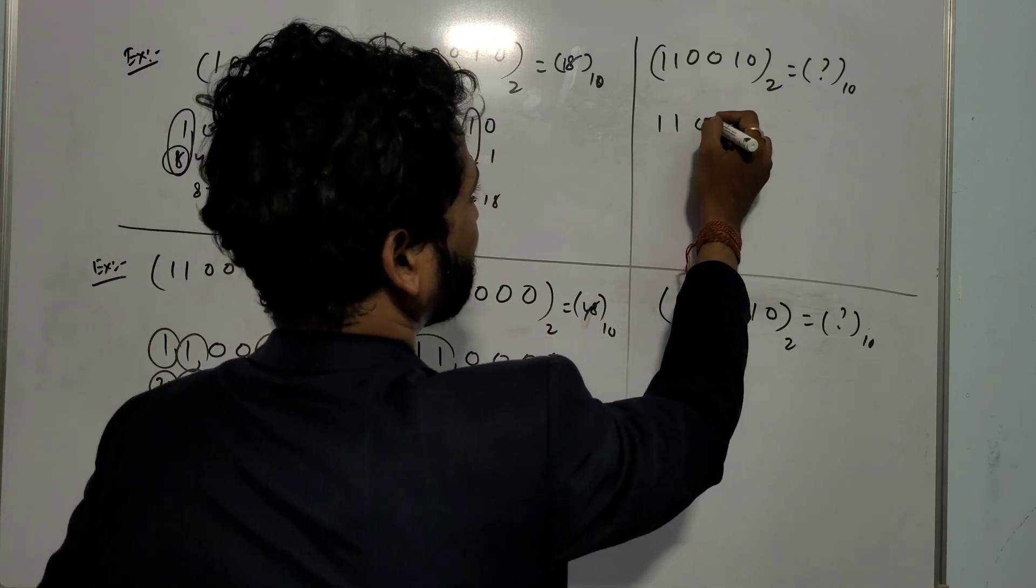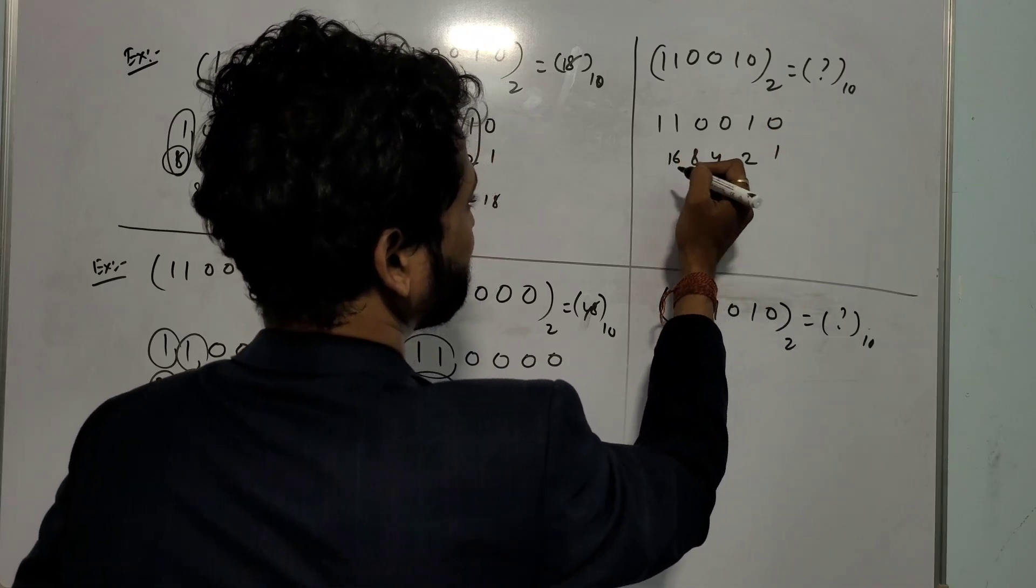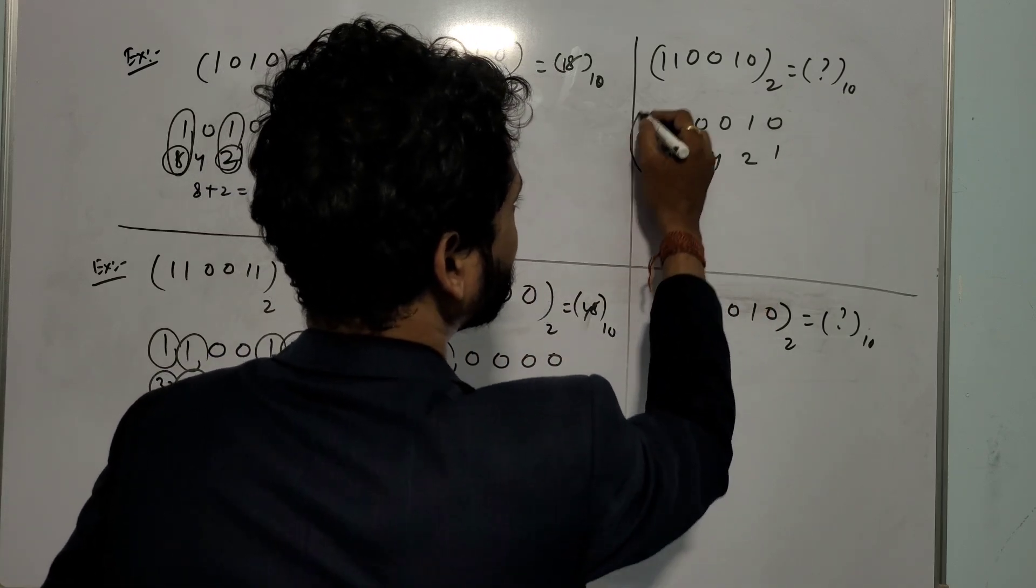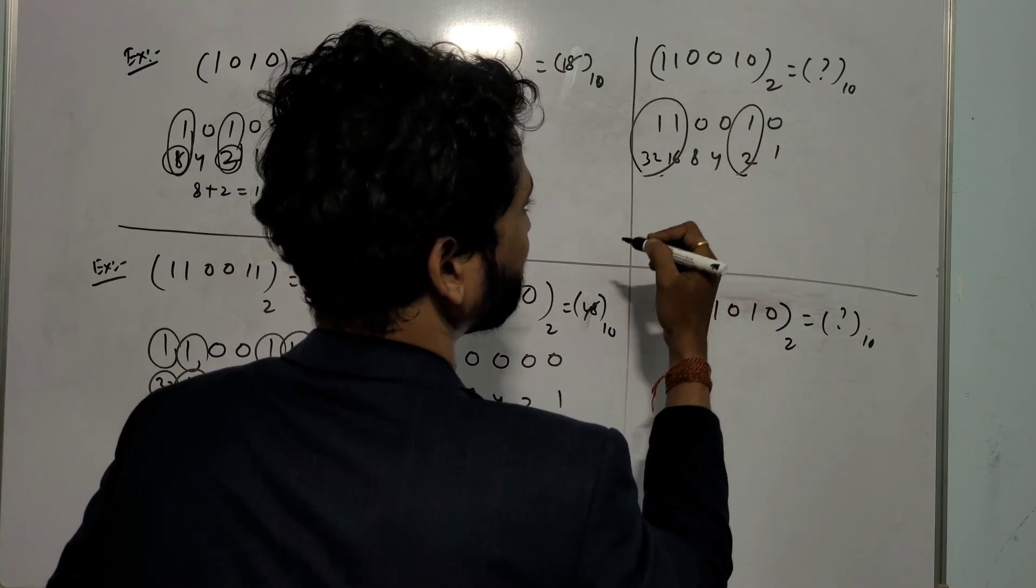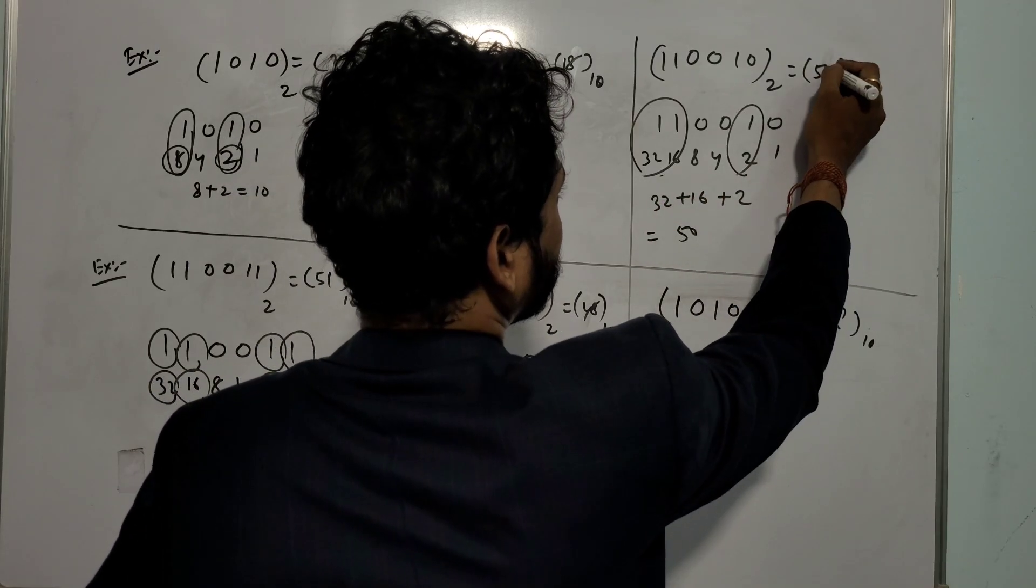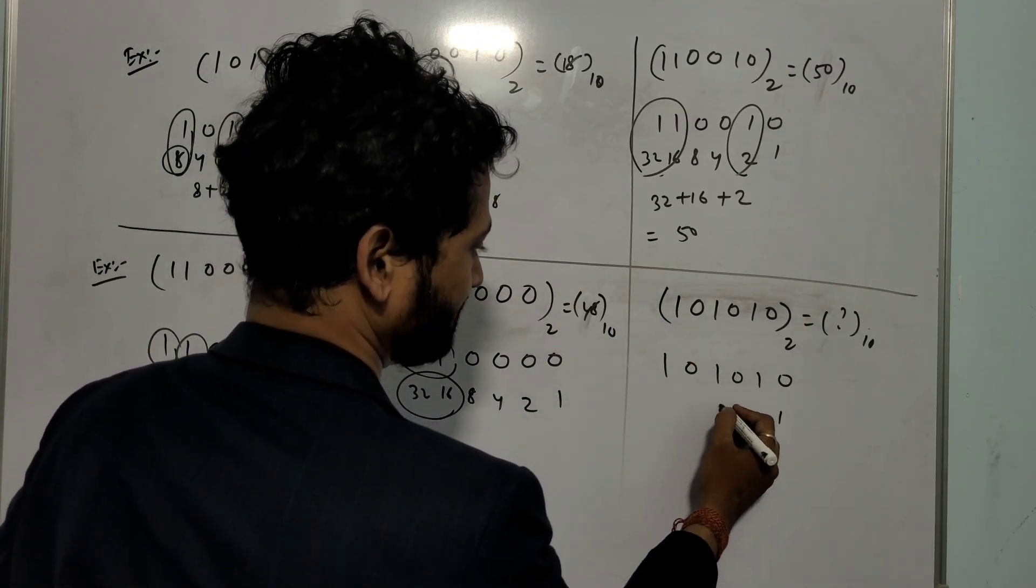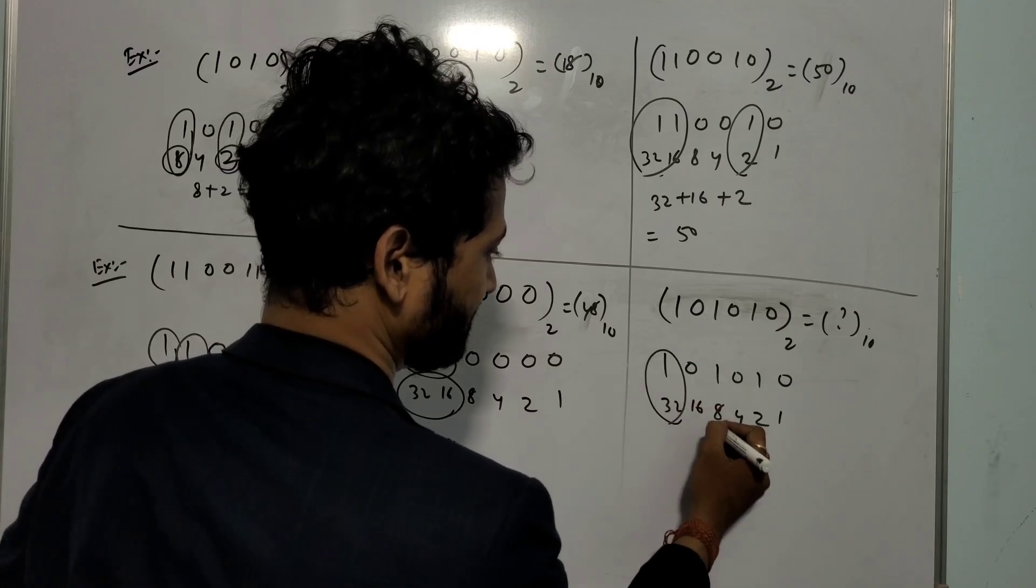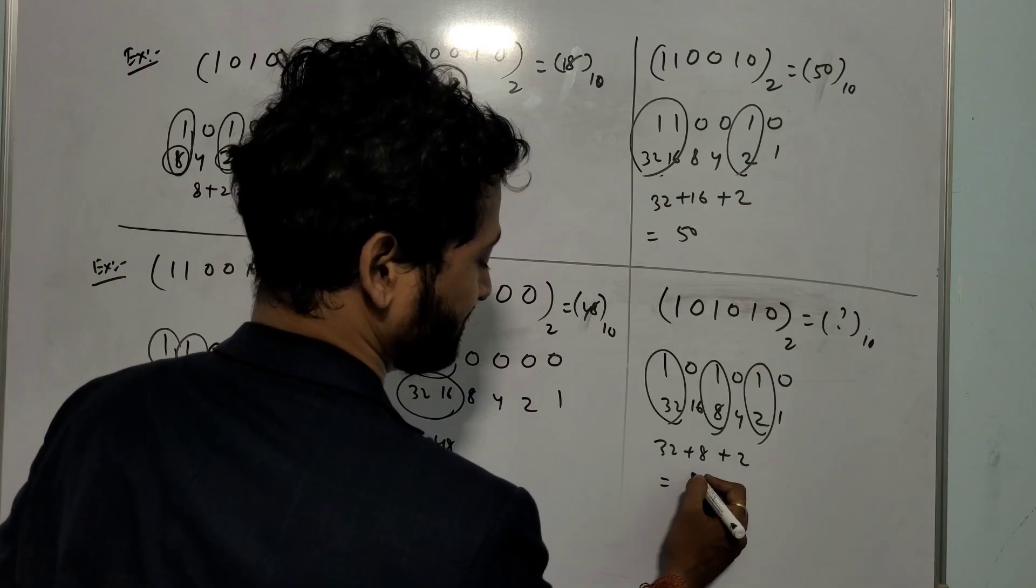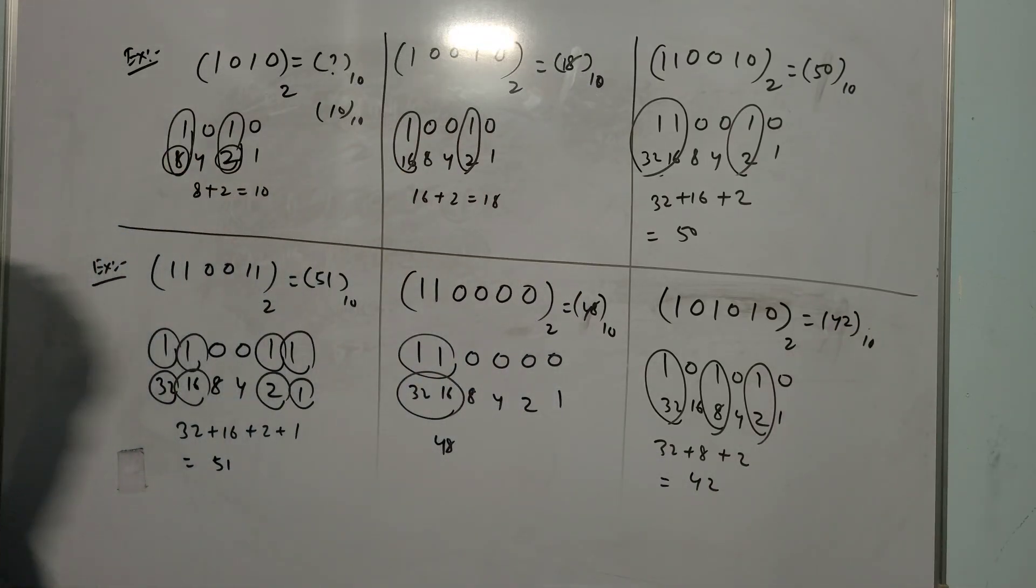You take this one: 110010. 1, 2, 4, 8, 16, 32. You take this one and this one. Next: 1110101. 1, 2, 4, 8, 16, and 32. You take this one, this one, and this one. 32 plus 8 plus 2 is 42. I hope it is clear. This is very easy.